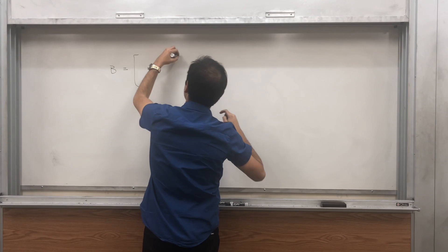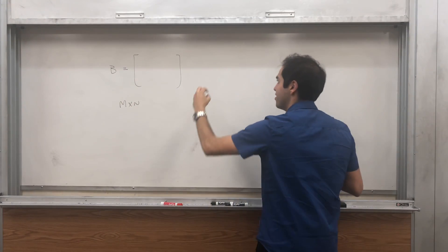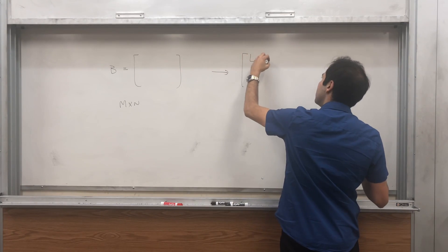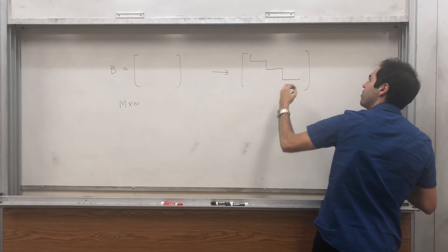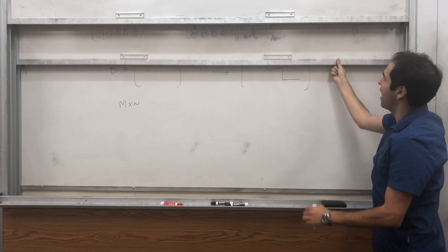B again, which might be some junk, is m by m. And so by induction hypothesis, we can actually row reduce B to get to become in triangular form.